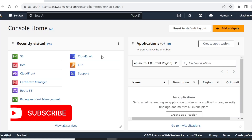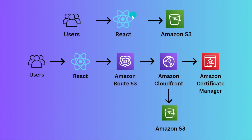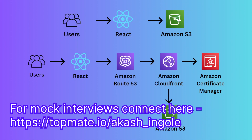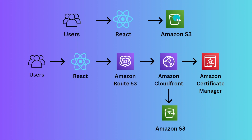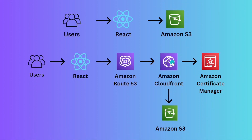Hey everyone, I'm Akash and welcome to this channel. In a previous video we deployed a React application on AWS S3, but there were some concerns and improvements we could have done. So in this video we are going to deploy a React application on AWS S3 via CloudFront, add an HTTPS layer by adding a certificate, and manage DNS via Route 53.